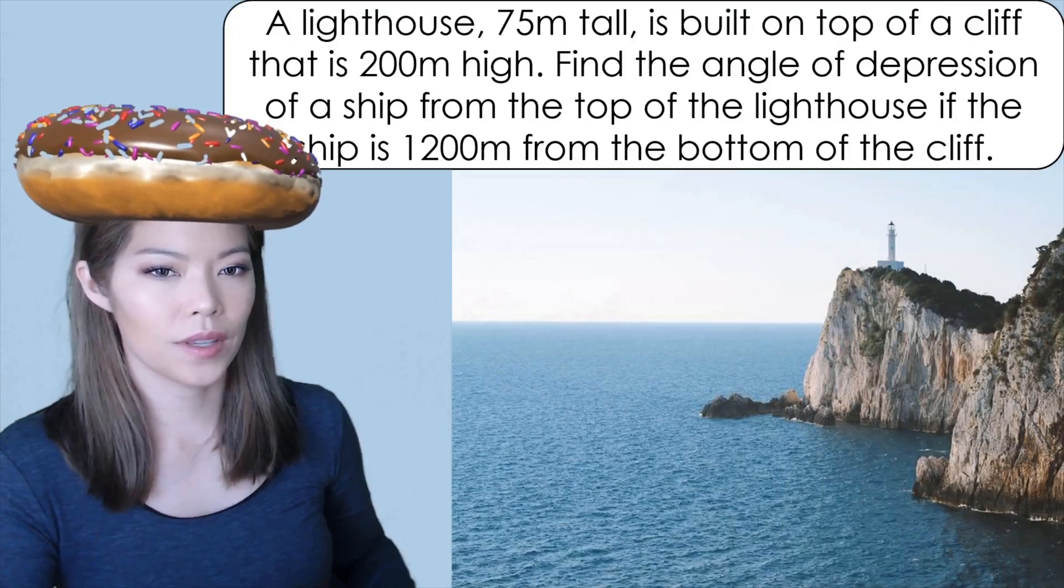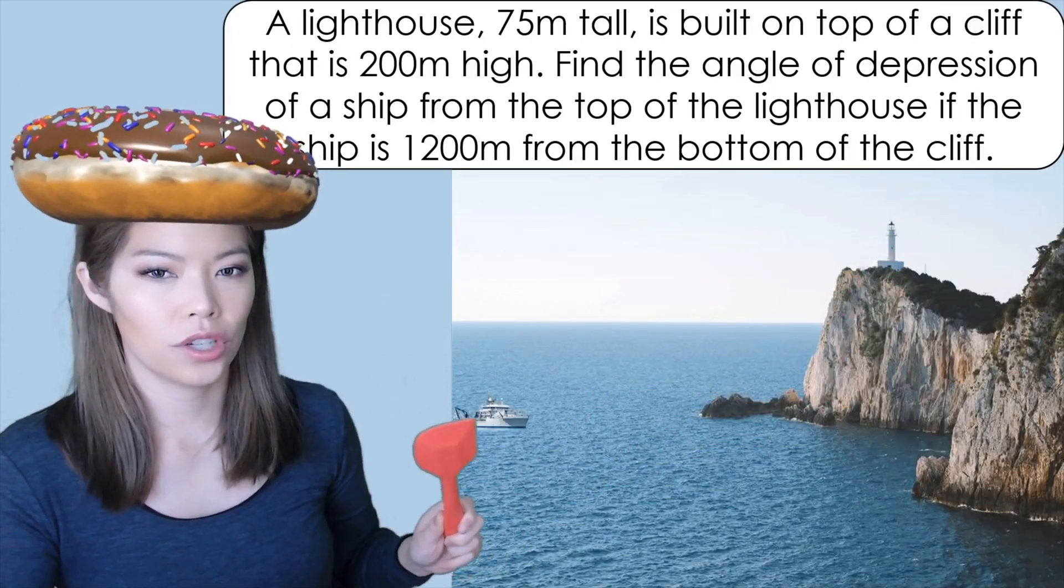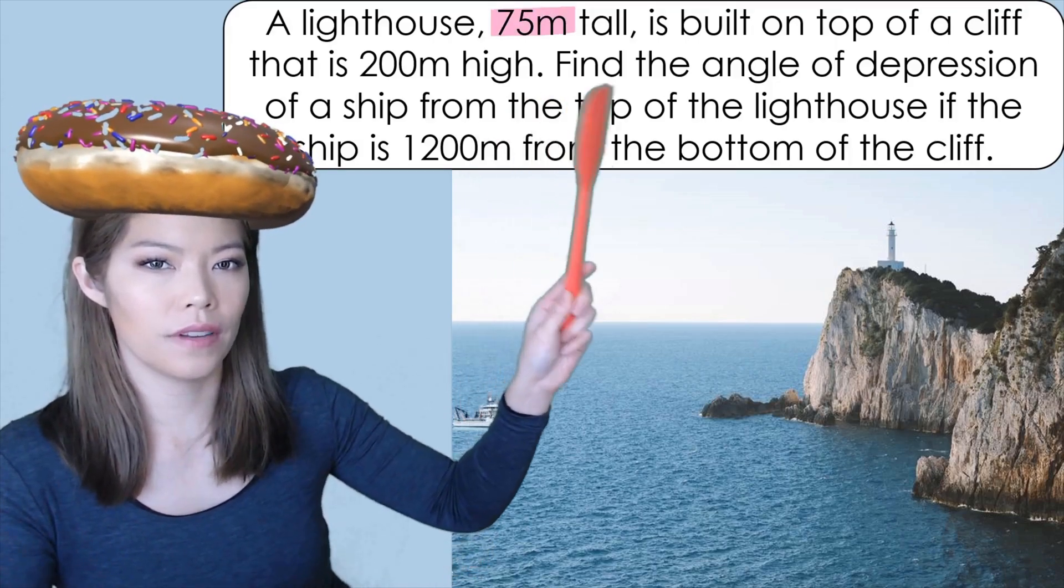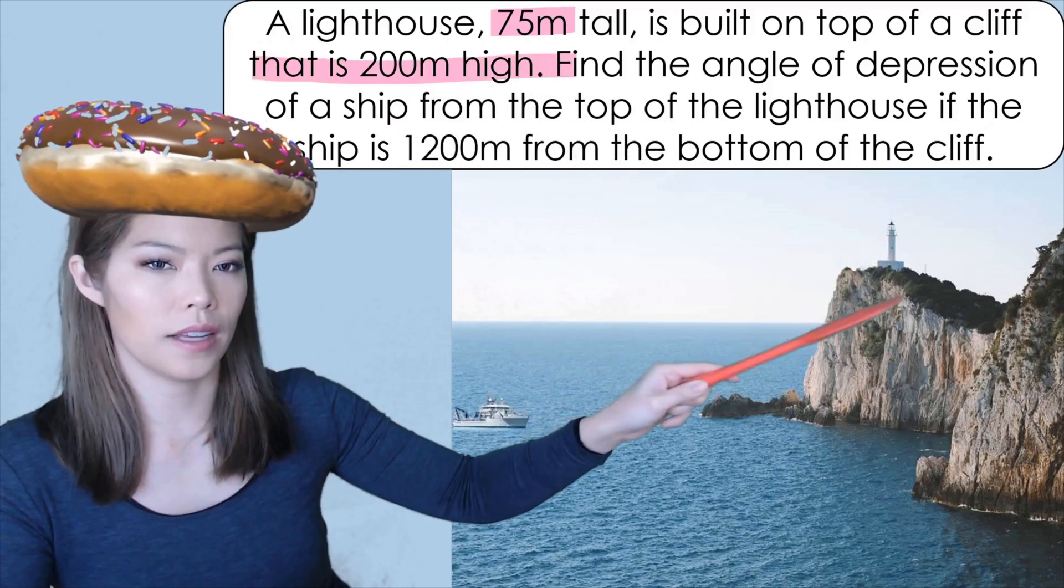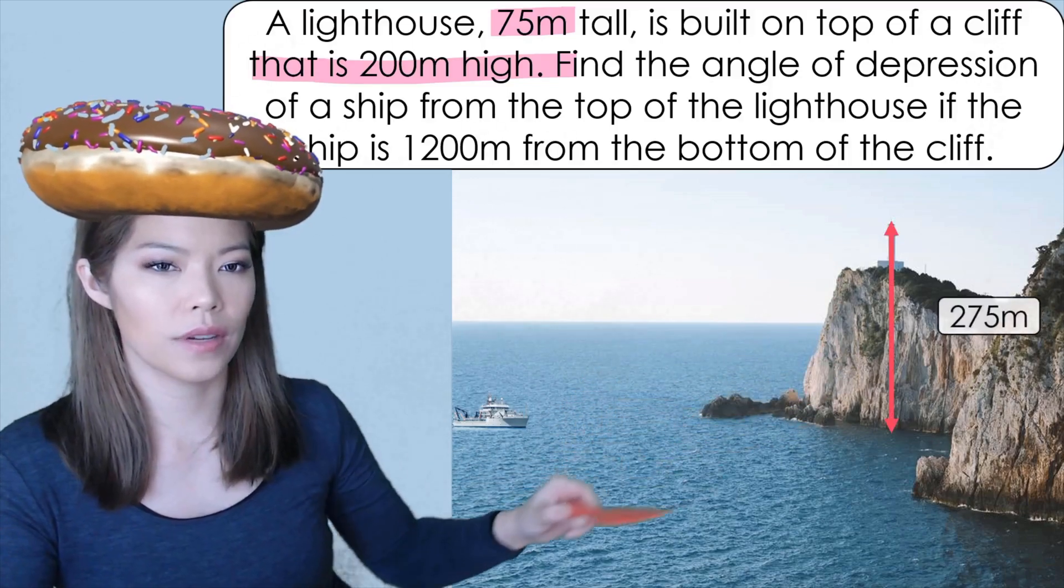Let's draw a diagram. So here we have the cliff, lighthouse and let's put a ship here. Now it says that the lighthouse is 75 meters tall and the cliff is 200 meters high. So the whole distance we have to add it together to get 275 meters.